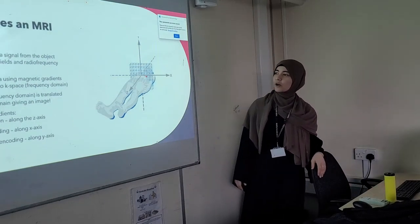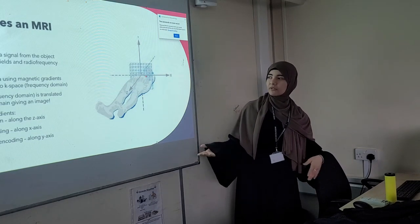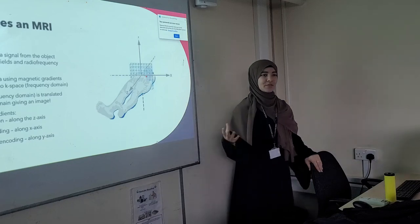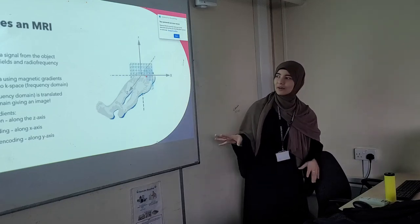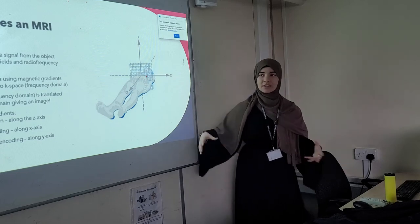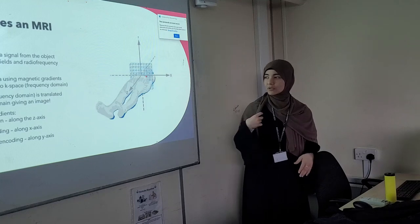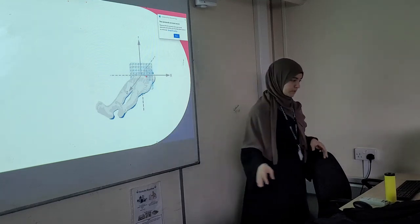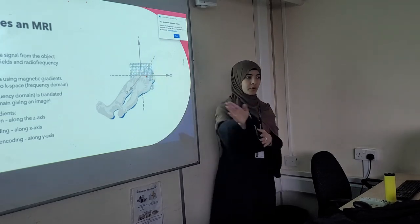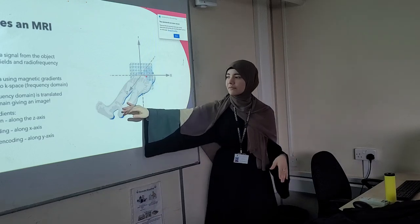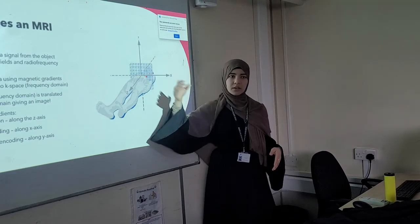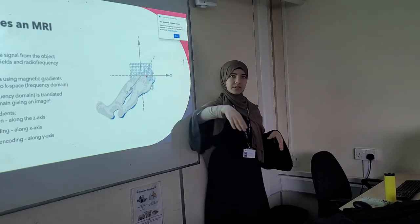An MRI stimulates a signal from the object using magnetic fields and radio frequency pulses. It reads data using magnetic gradients and places it into k-space, which is a frequency domain — this involves higher-level physics using vectors. The k-space is then translated into spatial domain, giving an image. Using gradients: the slice selection is your Z-axis, going through the body from feet upward; the phase encoding is your X-axis, going across the body; and the frequency encoding is your Y-axis, going up — together these give the 3D image.